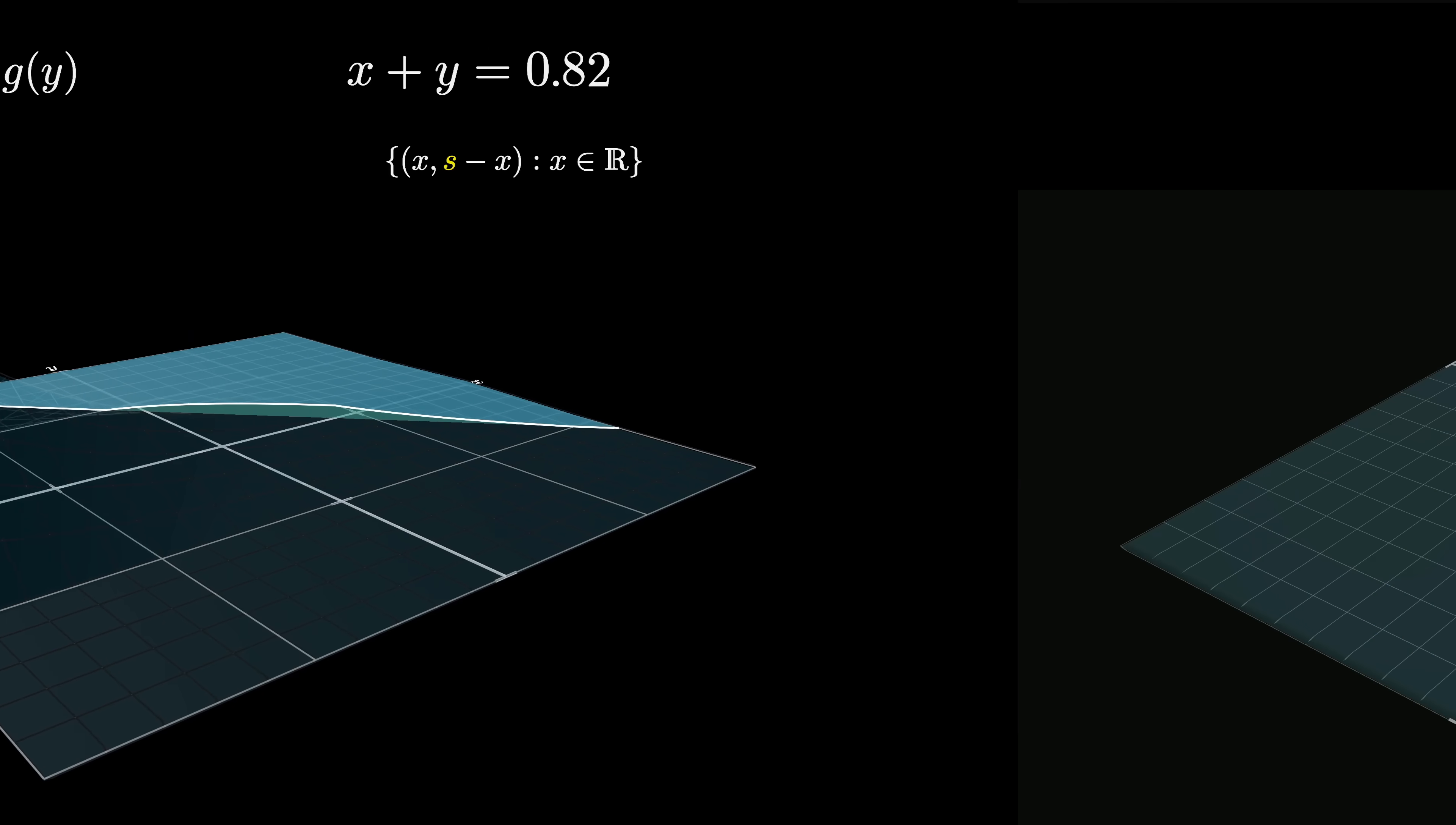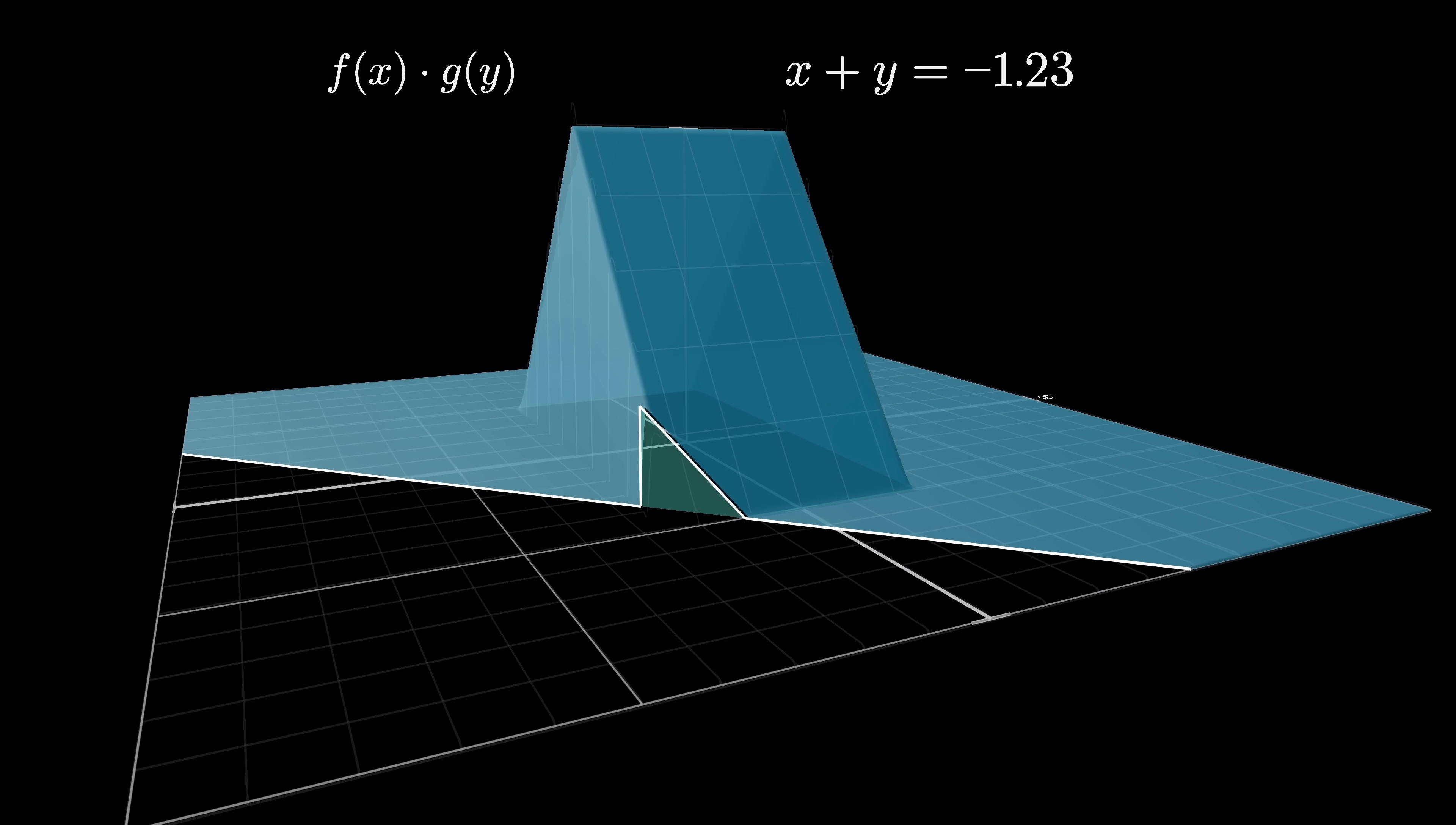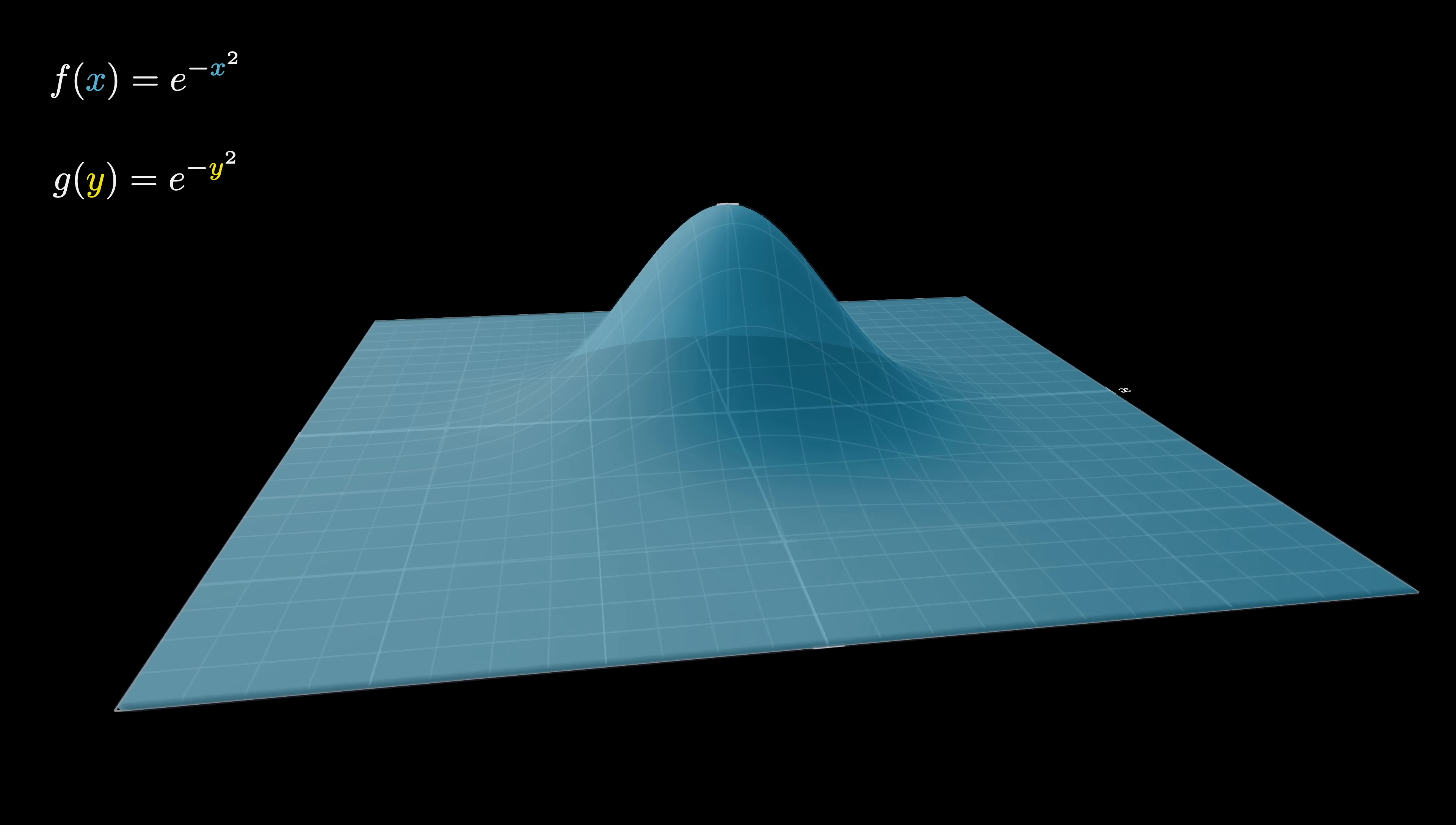So for most other pairs of functions, these diagonal slices will be some complicated shape that's hard to think about. And honestly, calculating the area would just amount to computing the original integral that defines a convolution in the first place. So in most cases, the visual intuition doesn't really buy you anything. But in the case of bell curves, you can leverage that rotational symmetry.